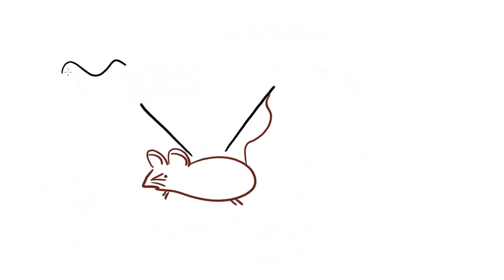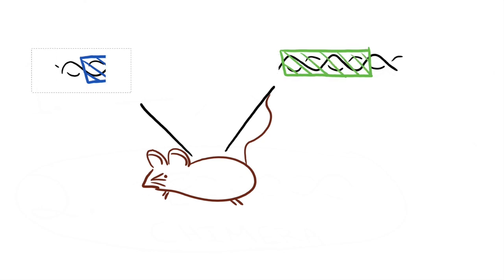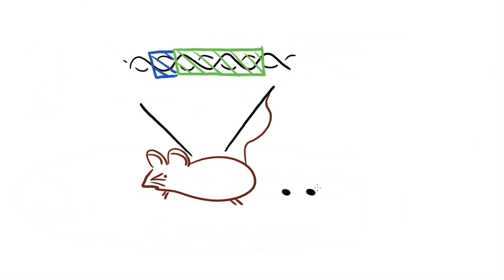In order to confirm that the chimera actually causes fibrolamellar, the researchers edited the genes of adult mice using the new CRISPR technology. They took the DNA of adult mice and created the same DNA deletion found in fibrolamellar patients. Within a couple of months, the mice with the DNA deletion had the cancer.